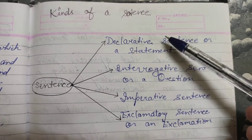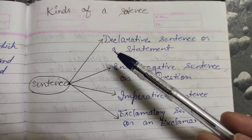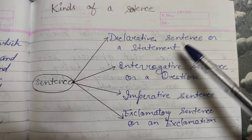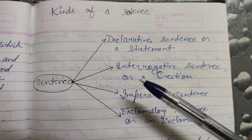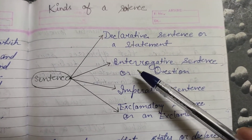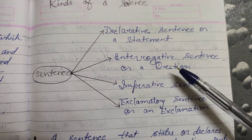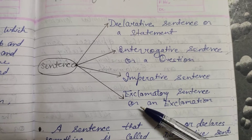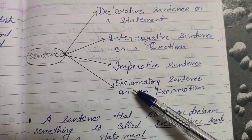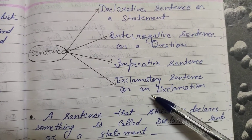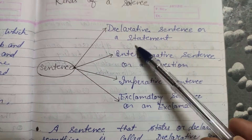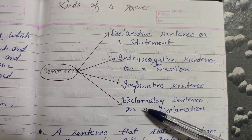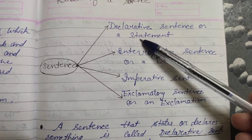Sentence kitne type ke hote hain — first, the declarative sentence or a statement; second, the interrogative sentence or a question; third, the imperative sentence; and fourth, the exclamatory sentence or an exclamation. So these four are the categories of a sentence.